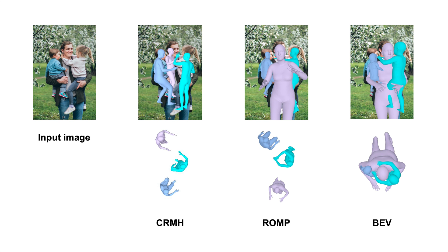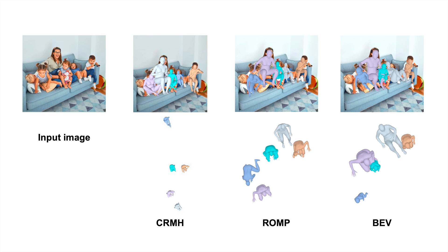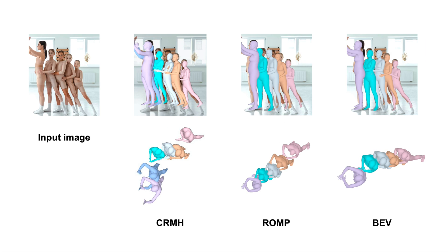We also perform qualitative comparisons between BEV, CRMH, and ROMP on challenging internet images. Notice that previous methods misplace children in depth. If children are mistaken as adults, the fact that they are shorter means that previous methods place them farther away from the camera. Occlusion also causes problems for previous methods.